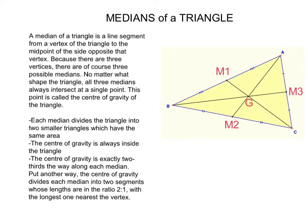Some features of the medians: each median divides the triangle into two smaller triangles which have the same area. For example, triangle ABM3 is equal in area to triangle BM3C.